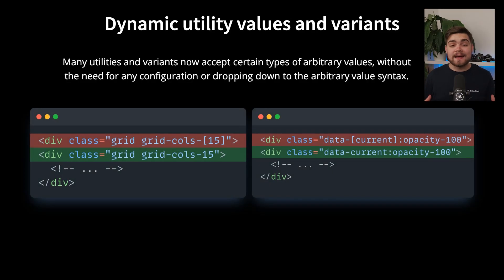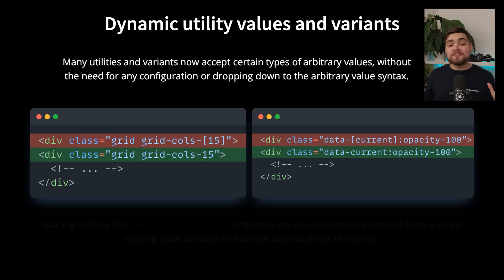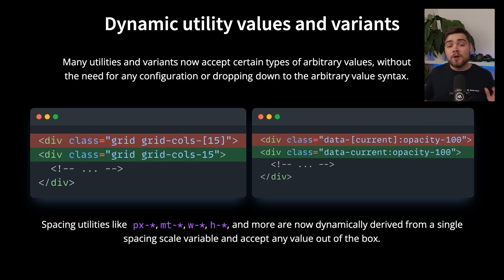Another favorite new feature is that they've simplified the way utilities and variants work. They now allow certain types of arbitrary values without configuration or the arbitrary value syntax. For example, you can create grids of any size, use Boolean data attributes without square brackets, and spacing utilities can now accept any value calculated based on your spacing variable.